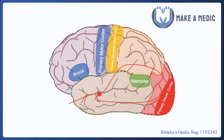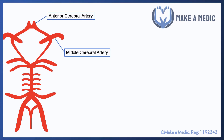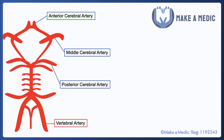It would be very convenient if the blood vessels involved in strokes only supplied one lobe at a time, because then we could easily figure out what the manifestations may be, but it's a bit more complicated than that. The blood supply to the brain has a central distribution network called the circle of Willis, where lots of different arteries come together. There are three main arteries: the anterior cerebral artery at the front, the middle cerebral artery, and the posterior cerebral artery. The input to the circle of Willis comes from the vertebral arteries on the posterior side and the internal carotid artery, which gives rise to the anterior cerebral artery and the middle cerebral artery.